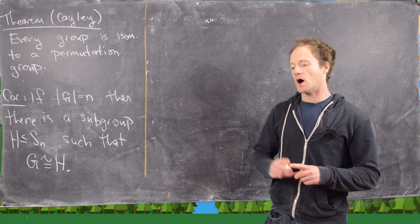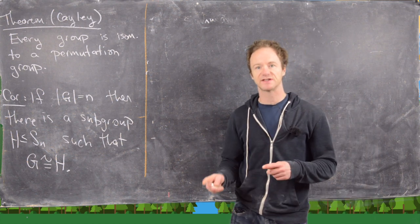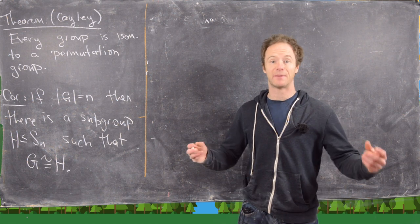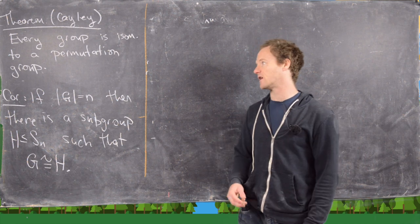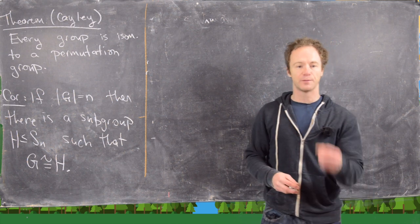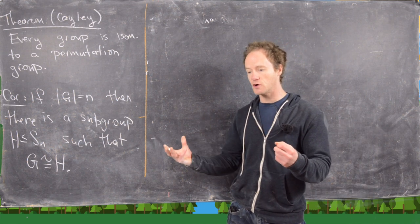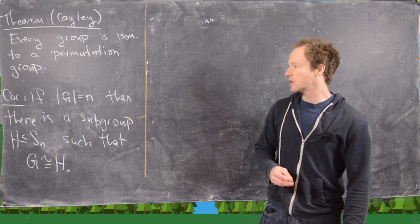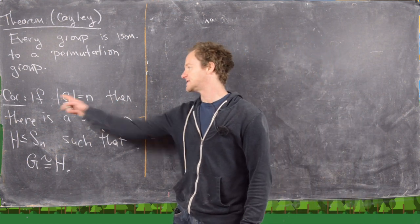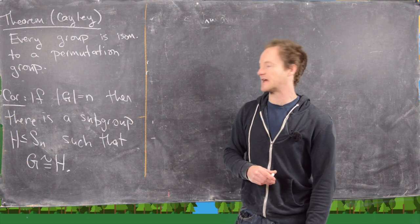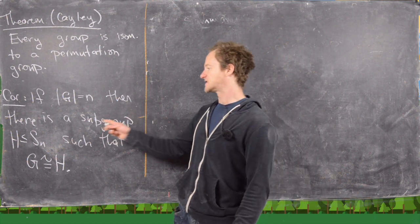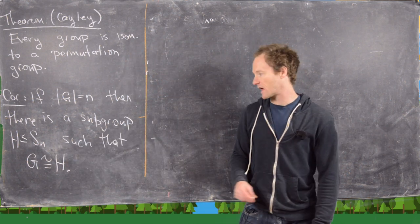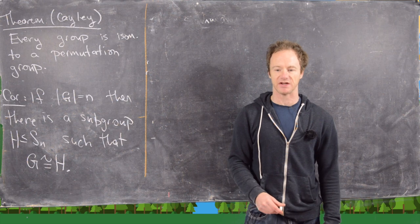Recall, a permutation group is a group of permutations on a set, and a permutation on a set is just a bijection from that set to itself. So what this says is that each group is isomorphic to a group made up of bijections of a set. The corollary says that if G is a finite group of order N, then there's a subgroup H of the symmetric group on N letters such that G is isomorphic to H.